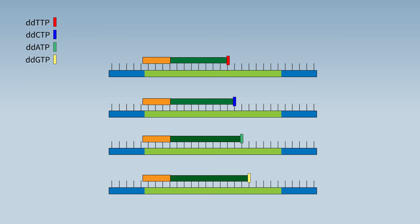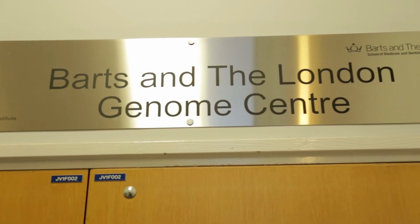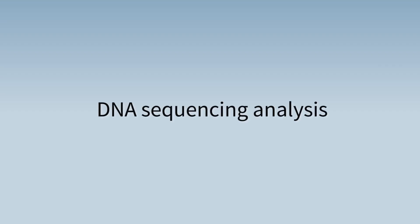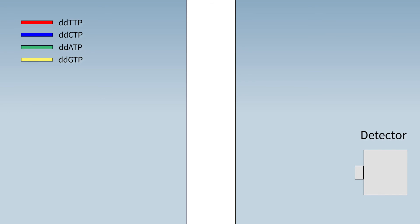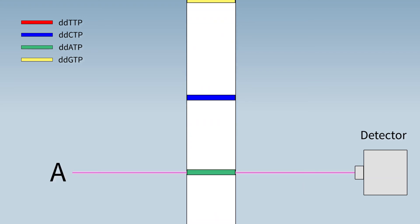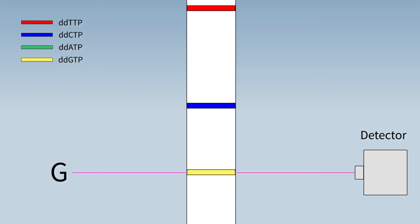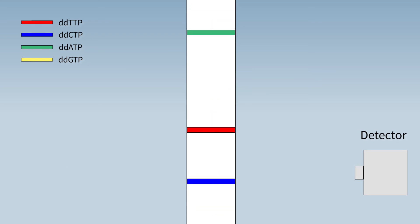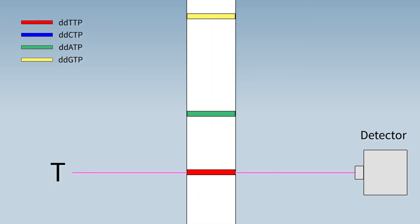The final step is to clean up the sequencing reaction using two enzymes: exonuclease and shrimp alkaline phosphatase. Once the cleanup reaction has finished, we load our sequencing reaction onto the genetic analyzer. The machine sorts our PCR products by size, with the smallest fragment — corresponding to the first nucleotide — recorded first. Detection is performed using a high-power laser, and each dideoxynucleotide has a specific colour corresponding to a particular nucleotide base. A detector records the base order as each fragment passes through.